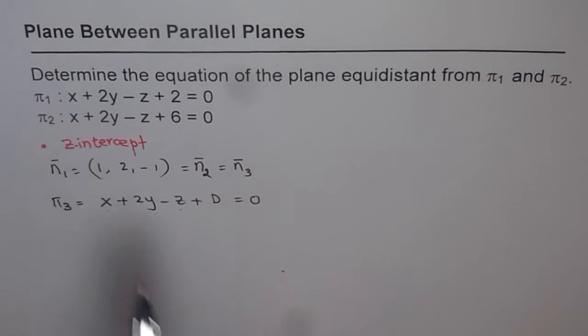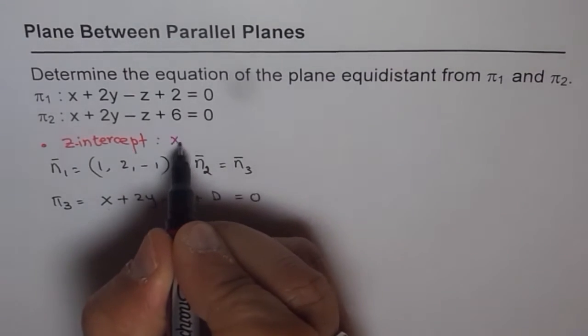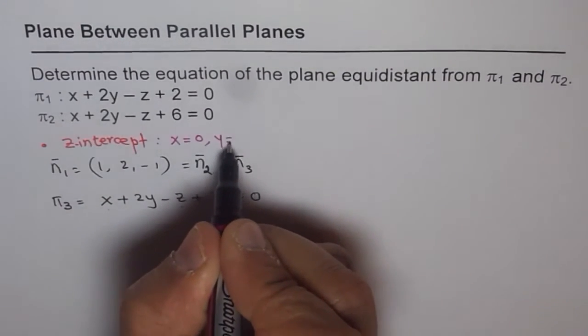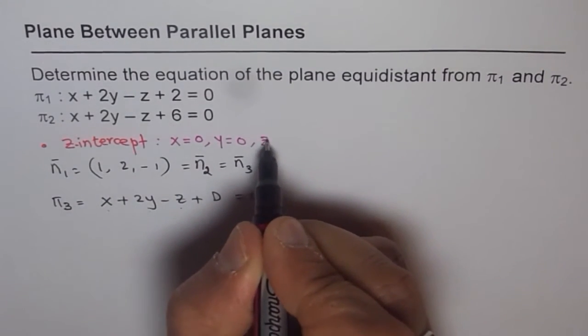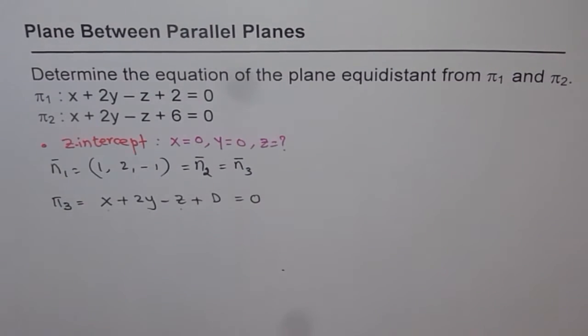To find z-intercept, basically, what do we do? To find z-intercept, we place x and y equals to 0. So we write x = 0 and we write y = 0 and then we find what the z-intercept is. We will do that for both the equations.